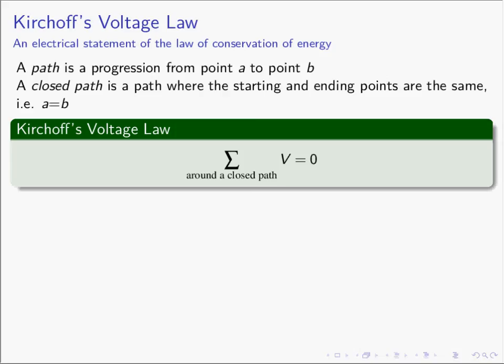Before we do Kirchhoff's Voltage Law, we need a couple of definitions to make sure we are all using our words in the same way. The first word we're going to define is a path. A path is just like if you go hiking — it's a progression from a point A to another point B.